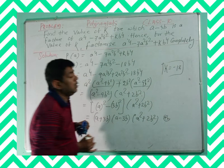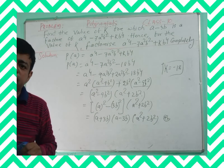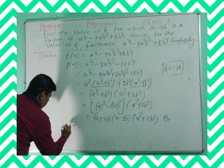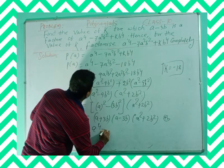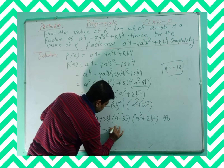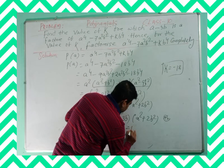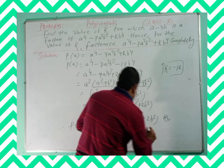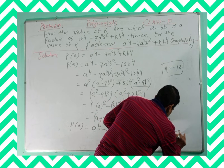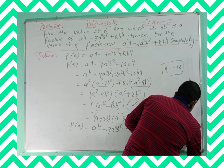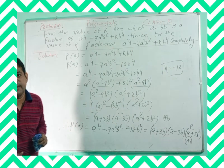Now you can bring a squared minus 9b squared out as a common factor, giving a squared minus 9b squared times a squared plus 2b squared. And a squared minus 9b squared factors further as a plus 3b times a minus 3b. So the complete factorization is: p of a equals a to the power 4 minus 7a squared b squared minus 18b to the power 4 equals a plus 3b times a minus 3b times a squared plus 2b squared. This is the complete factorization of the given polynomial.